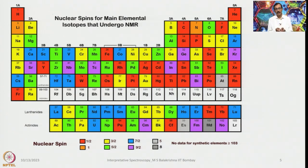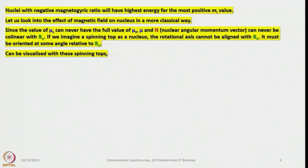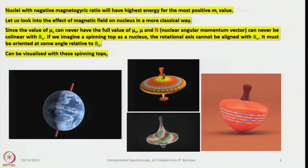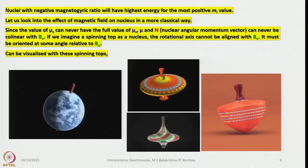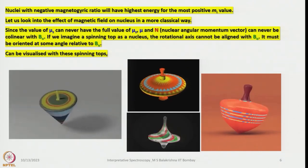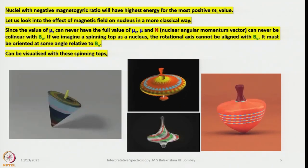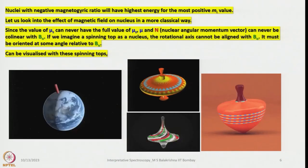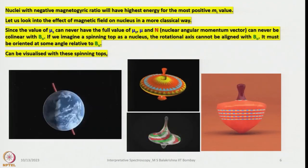Nuclei with a negative magnetogyric ratio will have the highest energy for the most positive m values. To understand the effect of a magnetic field on a nucleus classically: nuclei behave like tiny bar magnets. When subjected to a magnetic field, some align with the field and some oppose it. Because of induced motion under the magnetic field, they start precessing with respect to the applied field, never perfectly aligning but remaining at an angle.